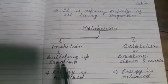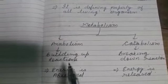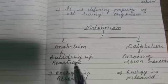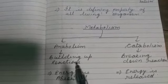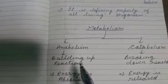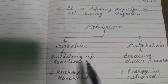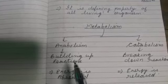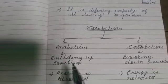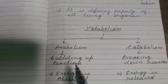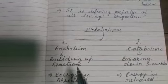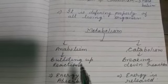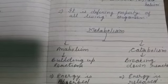Anabolism means building up reactions. Building up reactions means simple substances are converted into complex substances. For example, carbon dioxide, water, and sunlight help in glucose formation — this is called Anabolism.